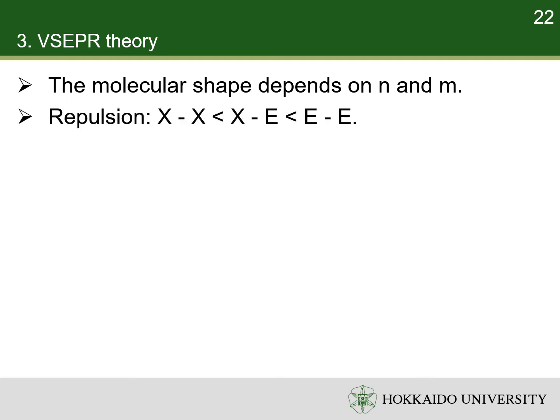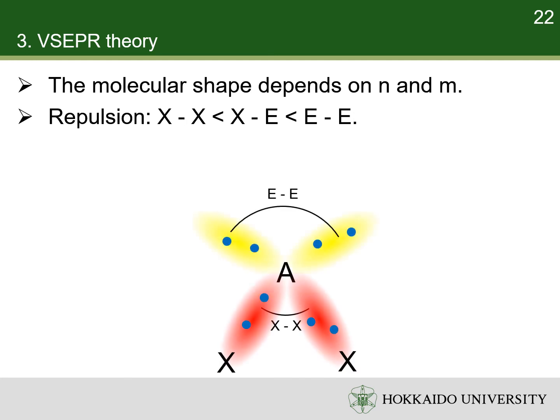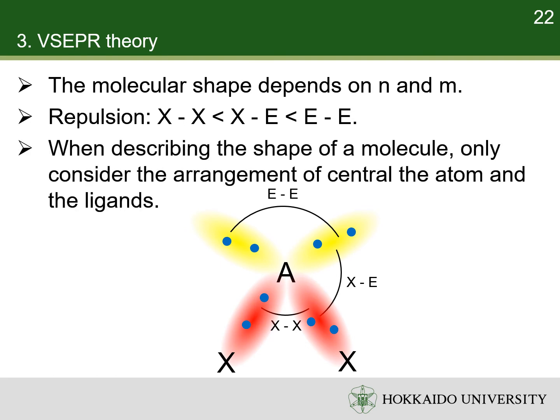The strengths of repulsions between electron pairs follow a sequence: the repulsion between two ligands is the weakest, the repulsion between two lone pairs is the strongest, and the repulsion between a ligand and a lone pair is medium. When describing the shape of a molecule, we only describe the arrangement of the central atom and the ligands, without mentioning the lone pairs.